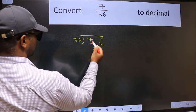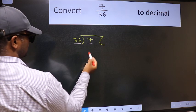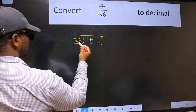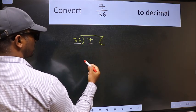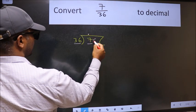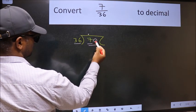Here we have 7 and here 36. 7 is smaller than 36. So what we should do is, we should put dot and take 0. So 70.